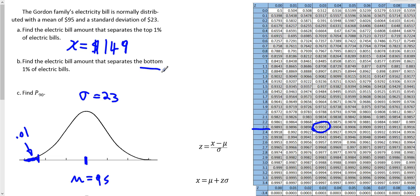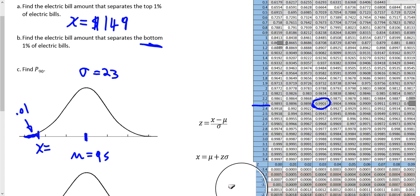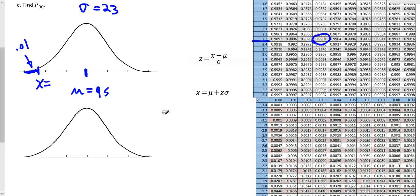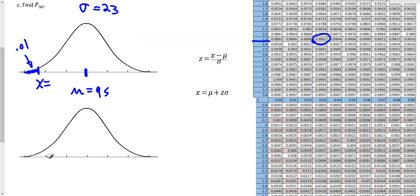When you're trying to find the bottom 1% on the left-hand side, we still go through the full calculation with the Z score. When you look up probabilities on this table, it gives you the area to the left — and that's exactly what we're looking for. Any value less than 95 is going to have a negative Z score, because it's to the left of the mean (mu = 0 on the standard normal). So we're looking for a negative Z score.